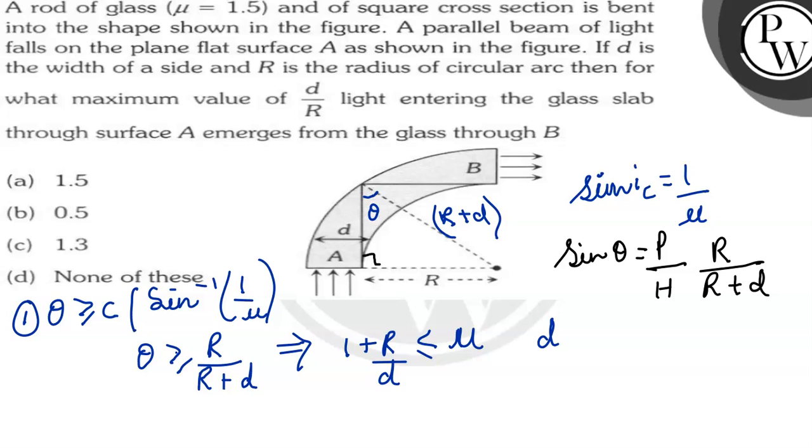So if we say D upon R we have reversed it. You can see we have R upon D is 1 upon mu and if we are reversing it D upon R, it will get reversed. D upon R which will be mu and 1 will come this side mu minus 1.